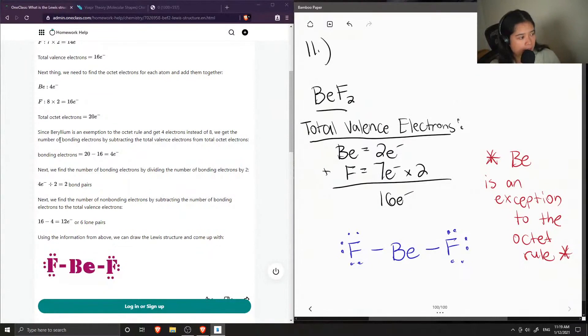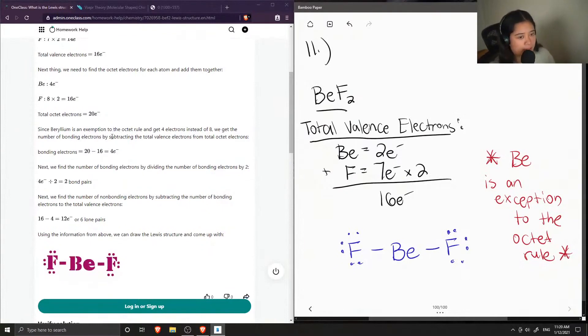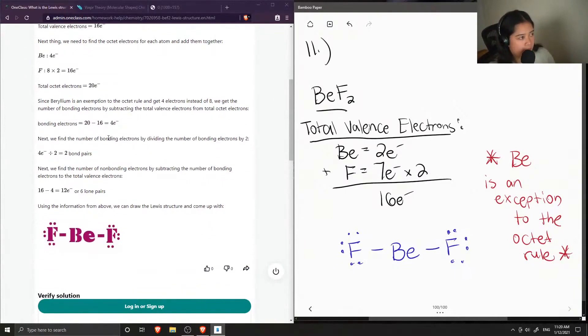...we get the number of bonding electrons by subtracting the total valence electrons from the total octet electrons. So this is a different method of finding the Lewis structure for this molecule. And then they just subtracted to get four bonding electrons.